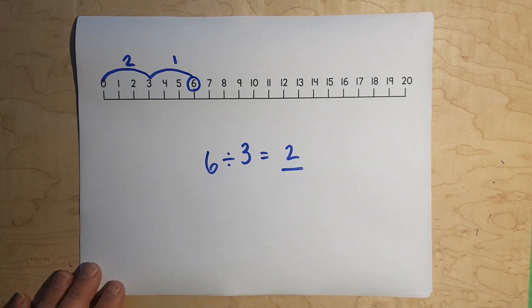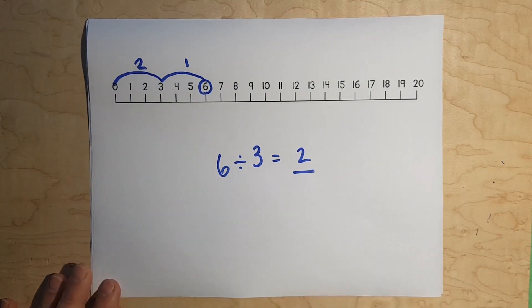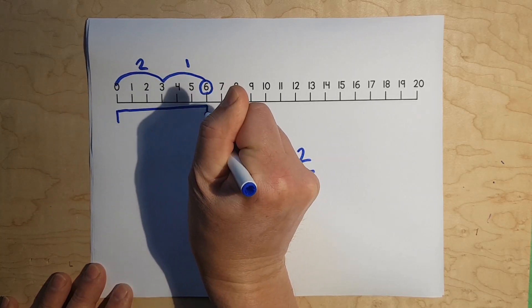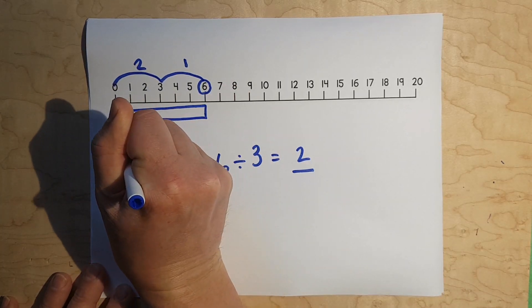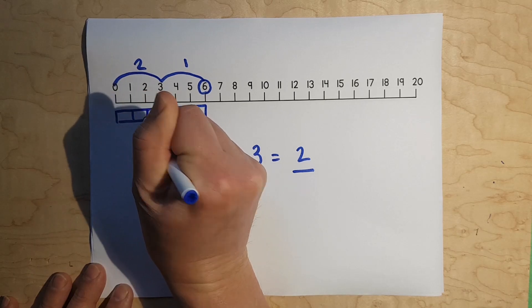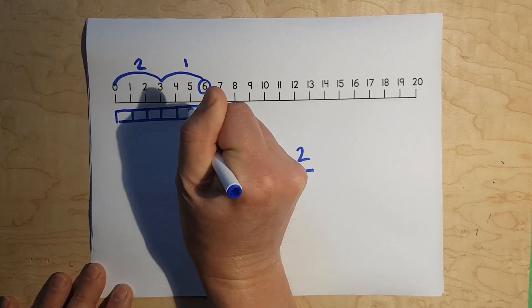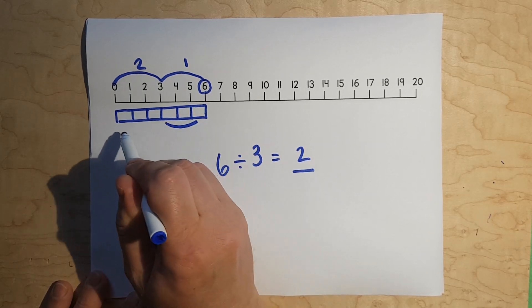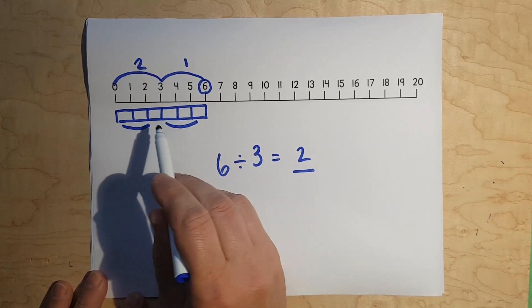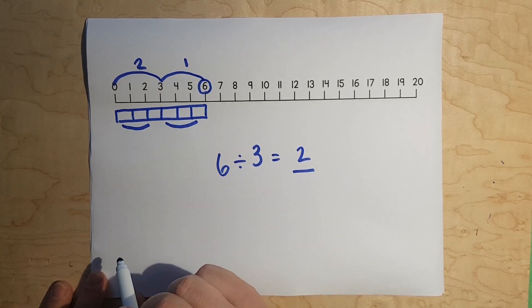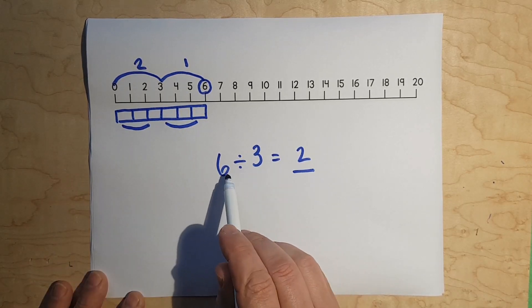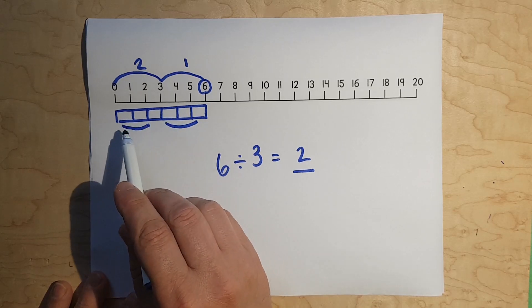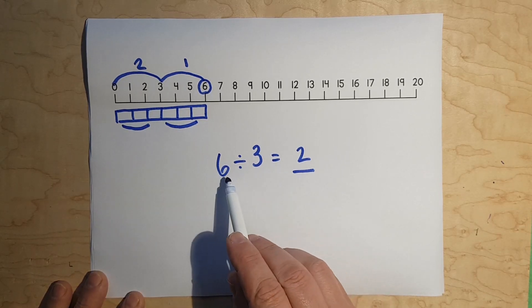Another way I could show this is to draw a little box and split it. Now you know that these two groups of 3 — 3 and 3, two groups of 3 — equals 6. Or 3 times 2 equals 6.